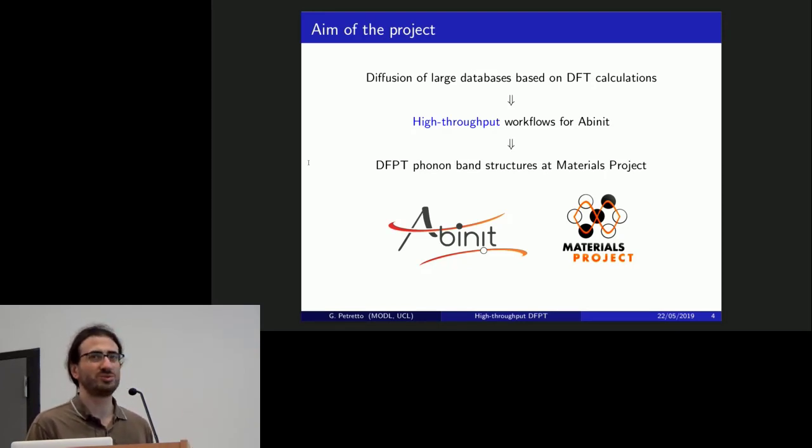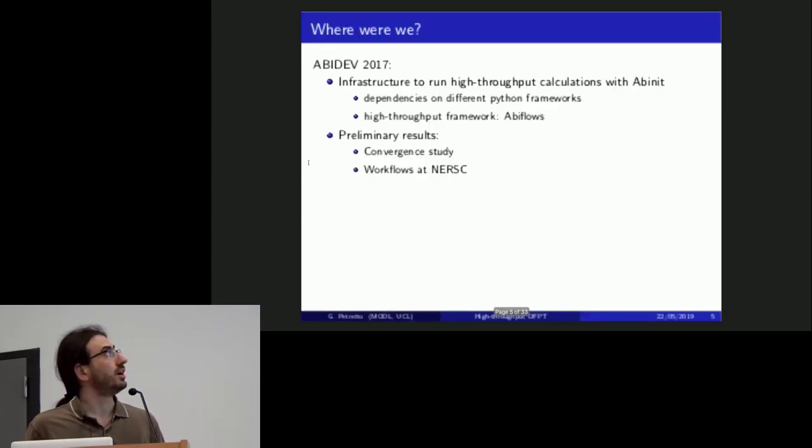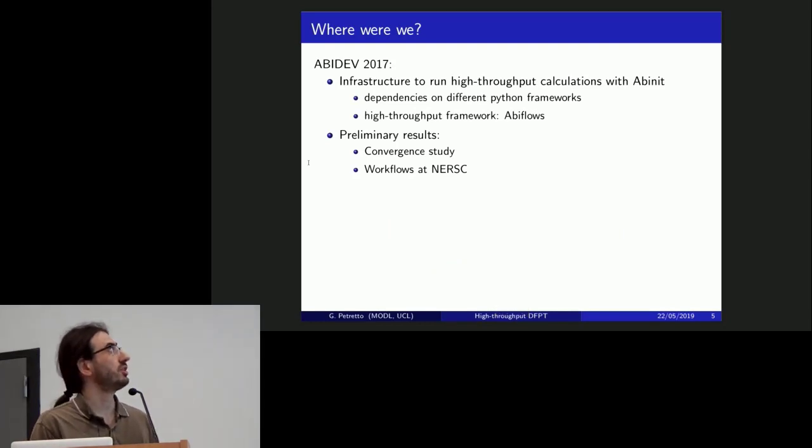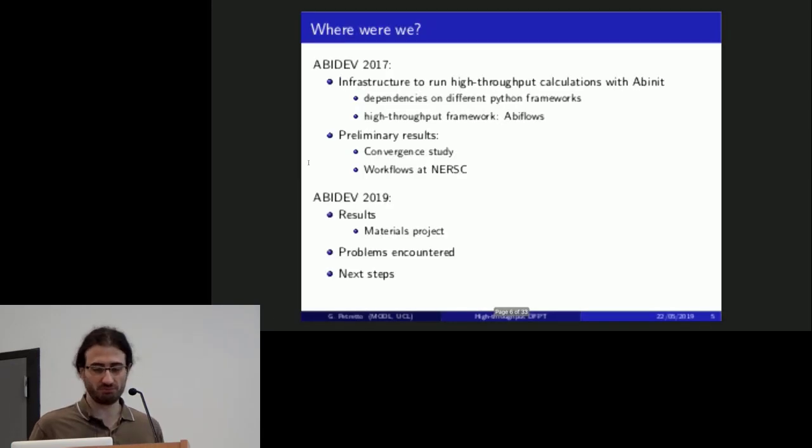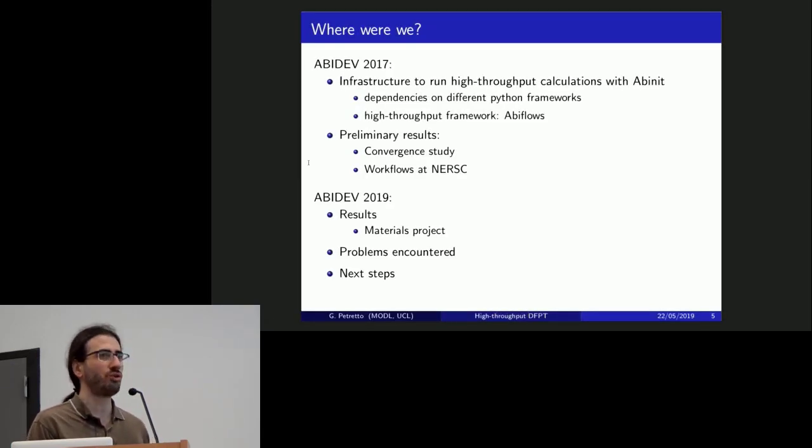The idea was that we wanted to make it available for people that wanted to make high-throughput calculations, and our aim to begin with was to actually have the formal structures that have been shown on the Materials Project database. So two years ago, we already had most of the infrastructure ready with the workflows implemented and calculations were running. We still had some preliminary results, and my aim for today is to show the results that we have actually obtained, mention a few problems that emerged, and what will be the next steps, hopefully.